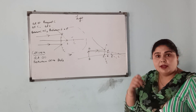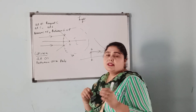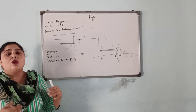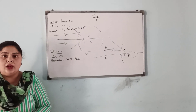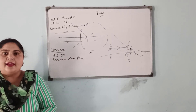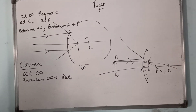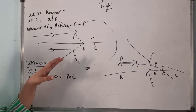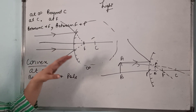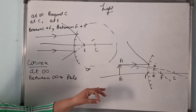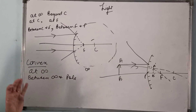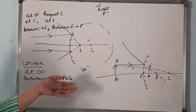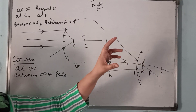The object is large but the image is small, so we can say the image is diminished. A question can come in the exam: which mirror always forms a virtual, erect, and diminished image? The answer is your convex mirror. A convex mirror always forms a virtual, erect, and diminished image.